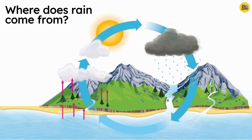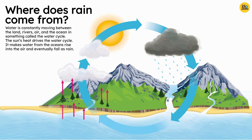Where does rain come from? Water is constantly moving between the land, rivers, air, and the ocean in something called the water cycle. The sun's heat drives the water cycle — it makes water from the oceans rise into the air and eventually fall as rain.